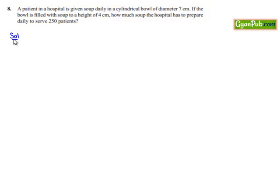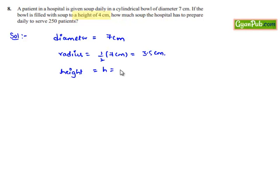Moving on to solution, the information given is that soup is supplied to the patients in the hospital in a cylindrical bowl of diameter 7 cm. Let us convert this into the radius which will be equal to half the diameter, that is half of 7 cm which is 3.5 cm. If the bowl is filled with soup to a height of 4 cm, therefore the height of the cylinder to which the soup is filled is 4 cm.